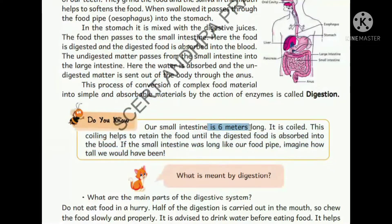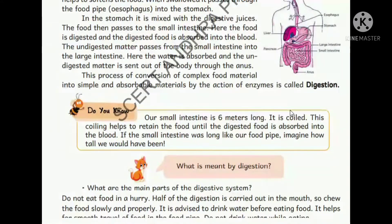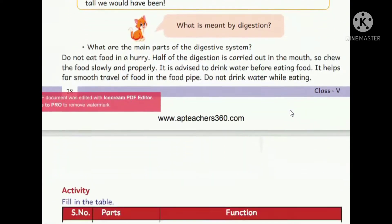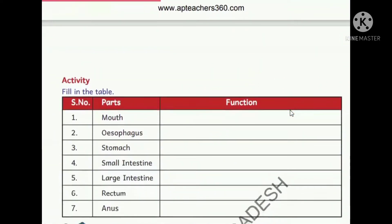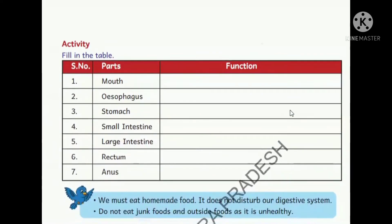We use many enzymes - liquid-state materials - for digestion in our body. Look at the small intestine: it is six meters long and is coiled in rounds inside our body.